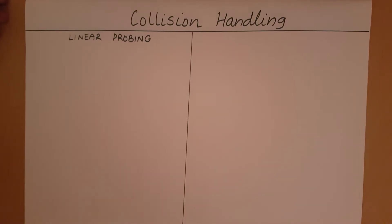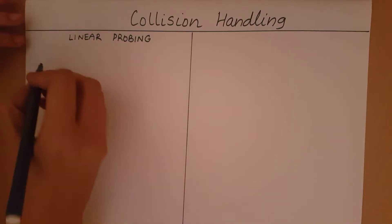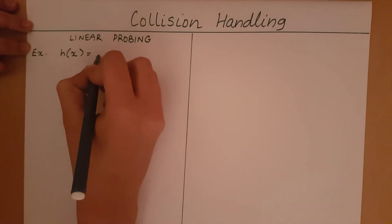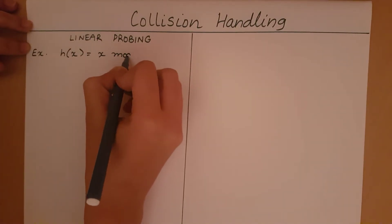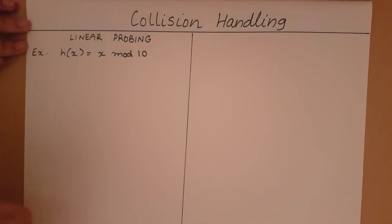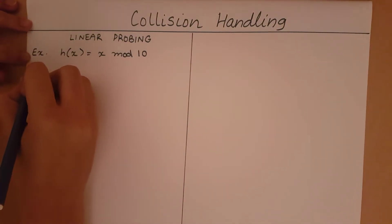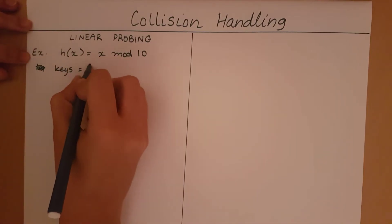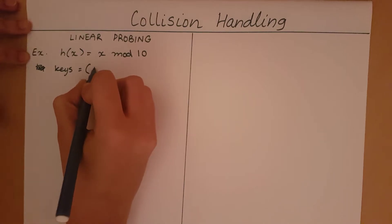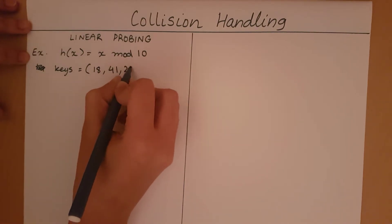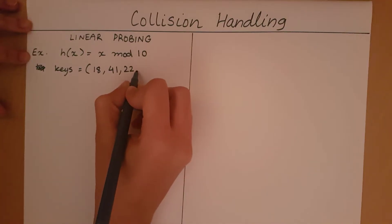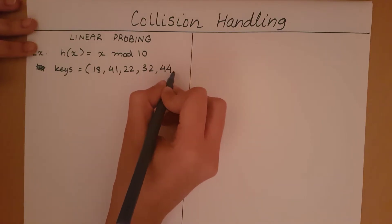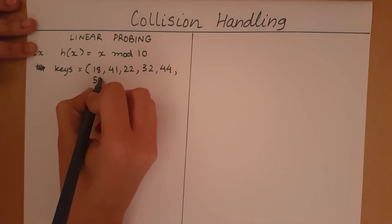Let's see what I mean by this using an example. Let my hash function be x mod 10. My keys are going to be: 18, 41, 22, 32, 44, 59, and 79.